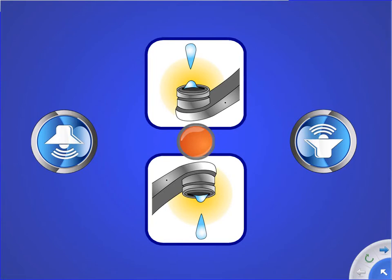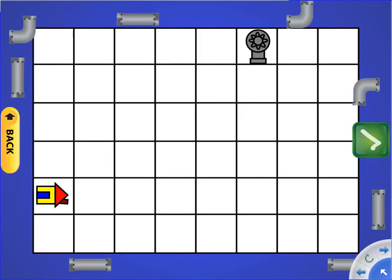Help the water get to the house by making a pipe pathway. Be careful not to leave any gaps in the pipes or you will waste water. When you have made your path, touch the green check mark button to see a possible answer. Touch the orange button in the middle to begin.